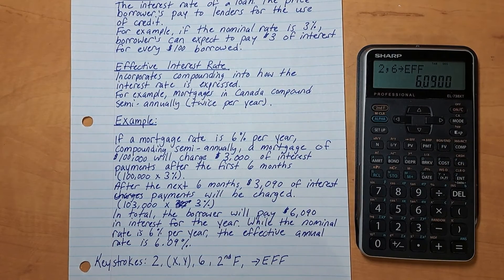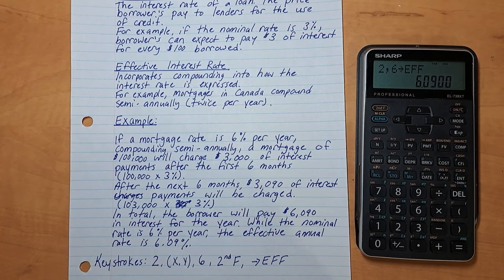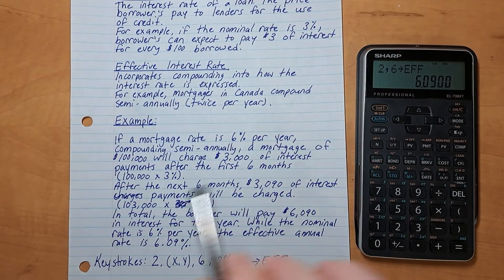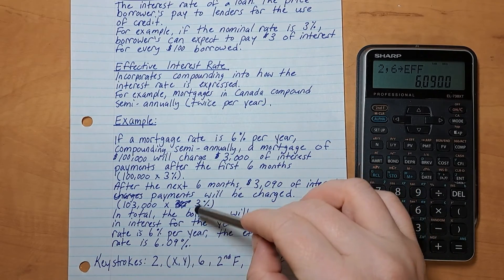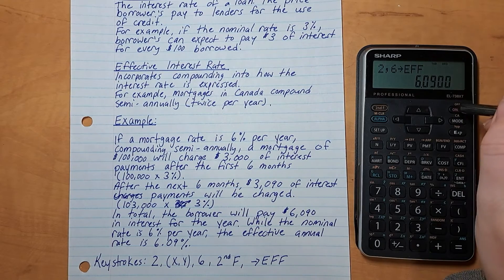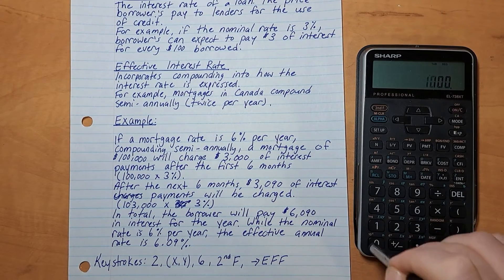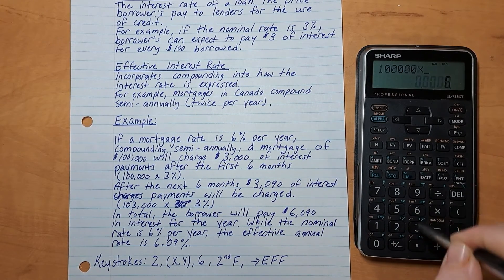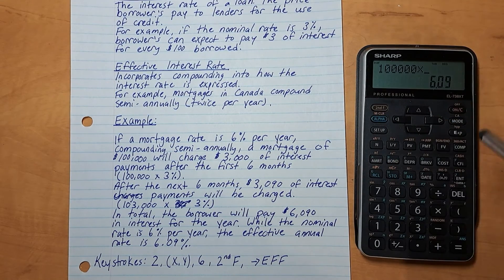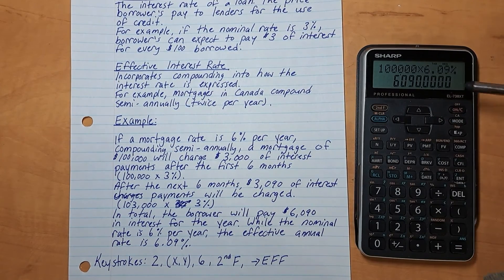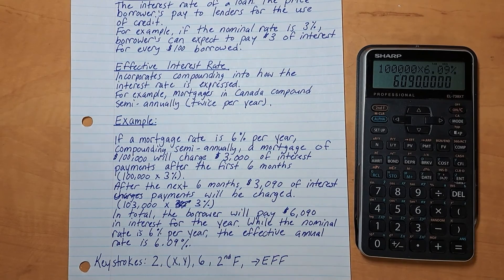If you wanted to figure out this question without going through all of these steps, you could do 100,000 times 6.09%, which would give you the interest for the year, which is $6,090.